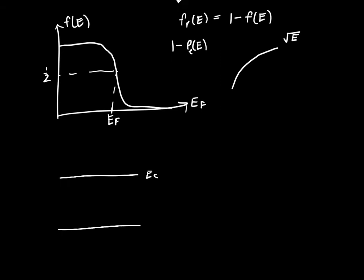If we draw out our band diagram again, EC and EV, the density of states function on the top was sort of this square root increasing dependent on the square root of E minus EC or the square root of delta E.